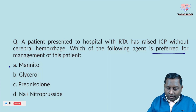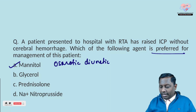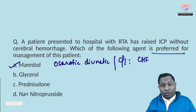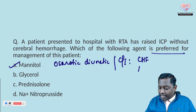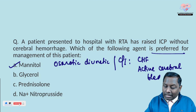The correct answer is mannitol, which is an osmotic diuretic. Osmotic diuretics are contraindicated in patients with congestive heart failure and in patients with active cerebral bleed. In congestive heart failure, they increase the intravascular volume.